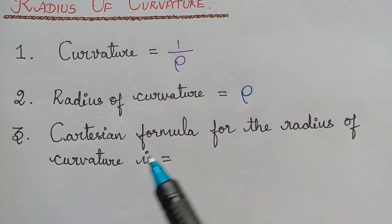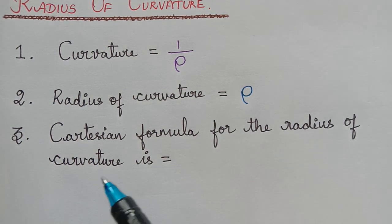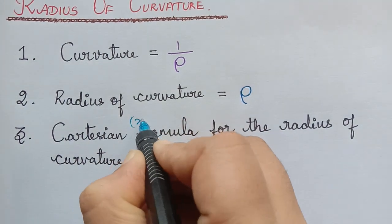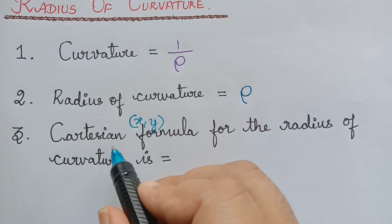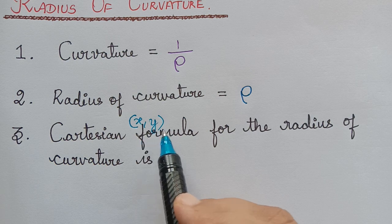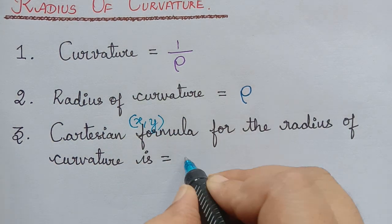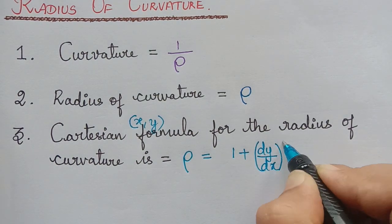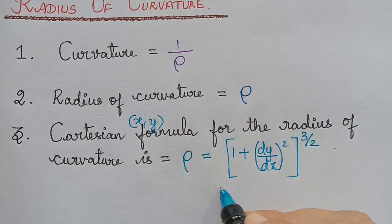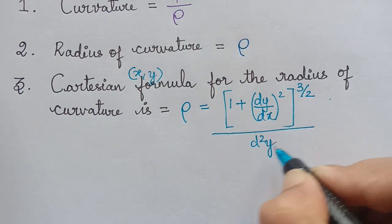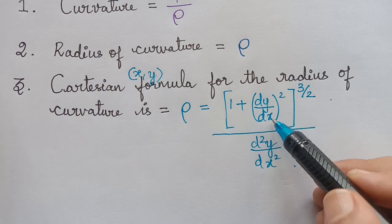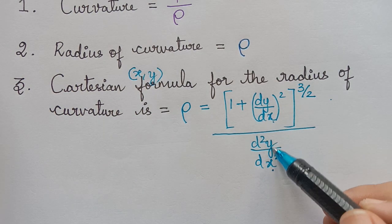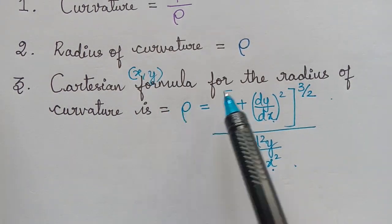The Cartesian formula for the radius of curvature applies whenever the curve is given in the form of x and y coordinates only. The formula is: rho equals (1 plus (dy/dx)²) raised to the power of 3/2, the whole divided by d²y/dx². Here dy/dx is the first derivative of y with respect to x, and d²y/dx² is the second derivative of y with respect to x.